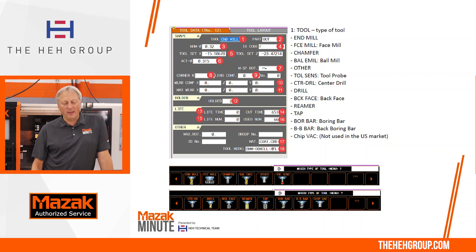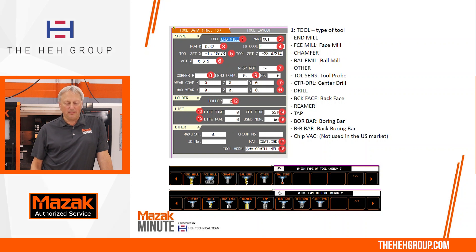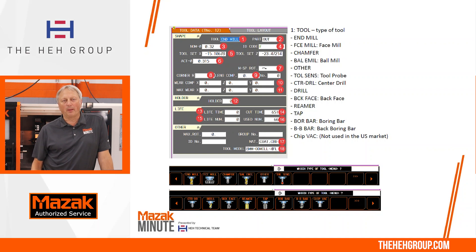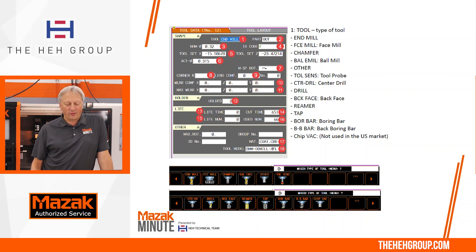The first section is going to be the tool type. There you're going to have end mills, face mills, chamfer cutters, ball end mills, other tools, tool probe, center drill, drill, back face, reamer, tap, boring bar, back boring bar, and finally chip vac. The chip vac is not actually in the U.S. market but it is still displayed on our screen.